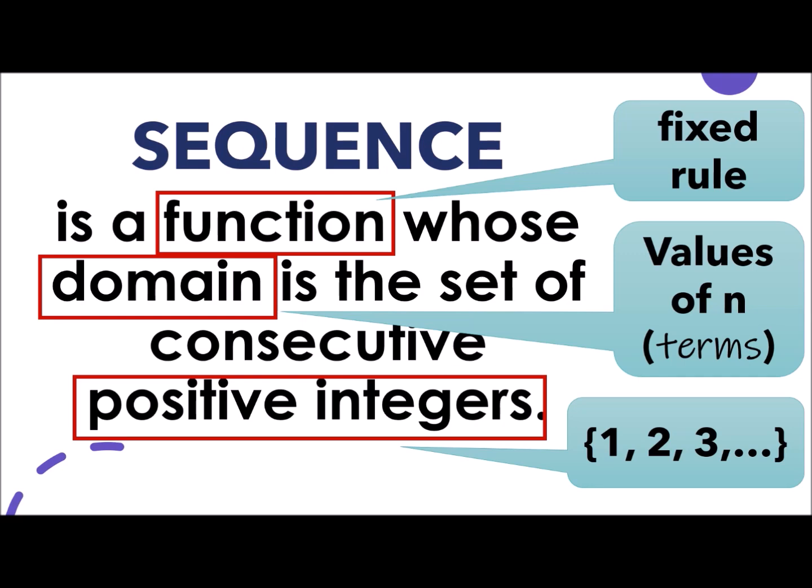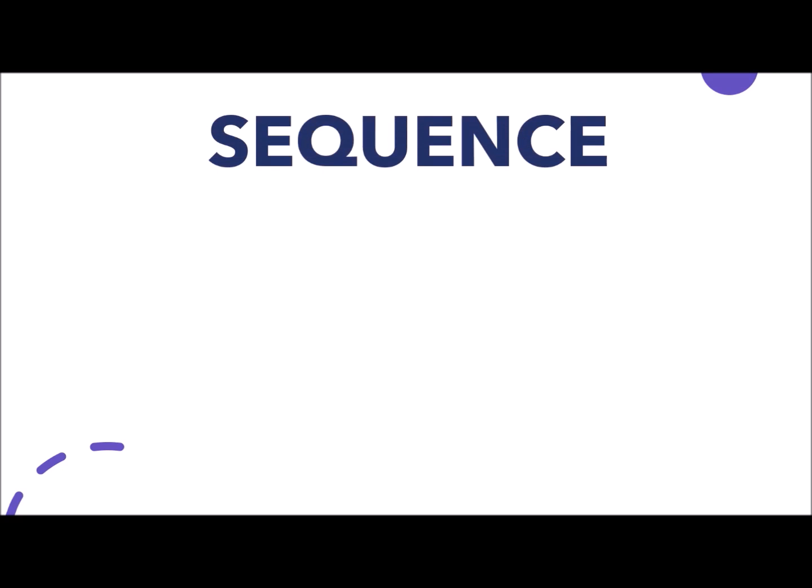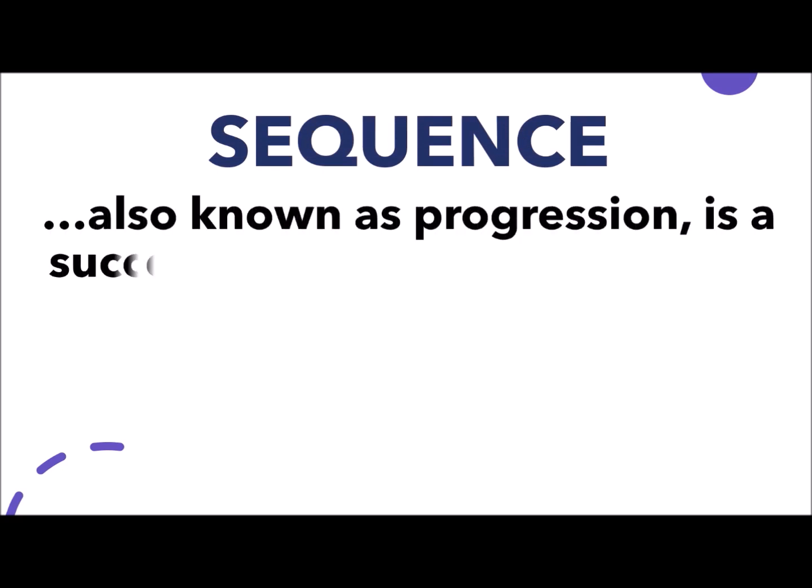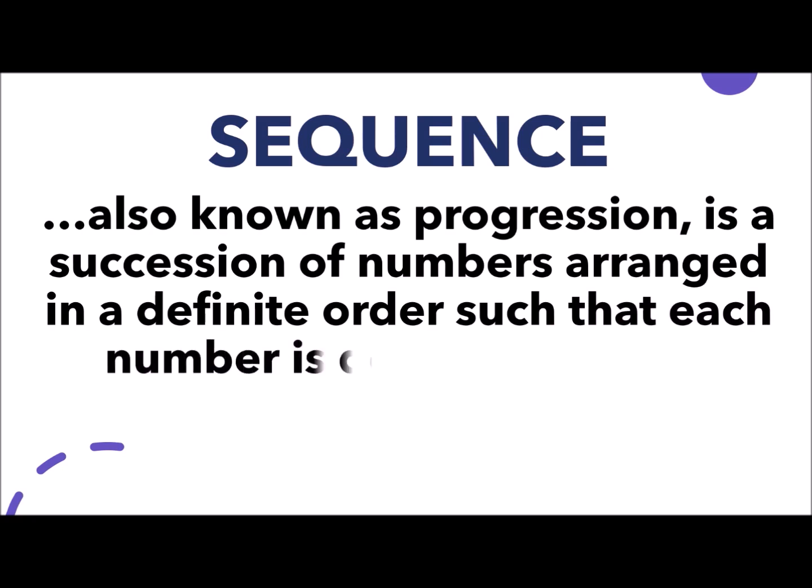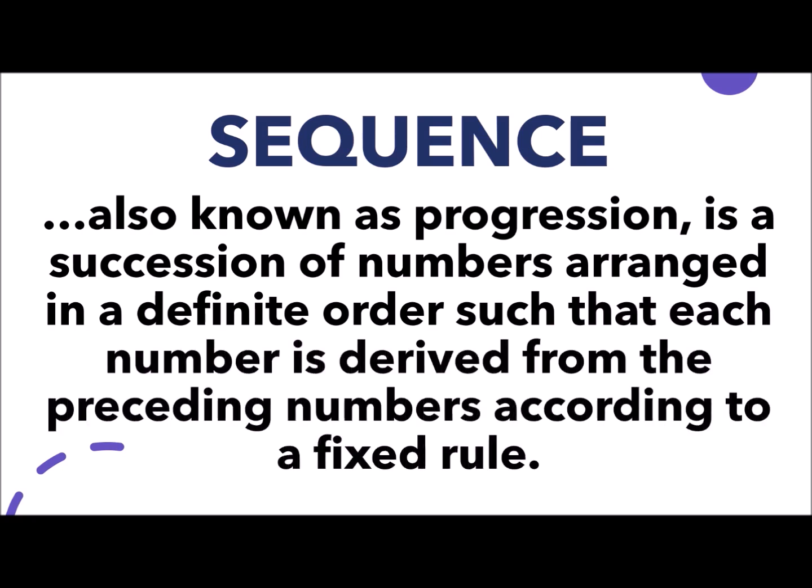Let's try another definition. Sequence, also known as progression, is a succession of numbers arranged in a definite order such that each number is derived from the preceding numbers according to a fixed rule. Why is it progression? Because it is continuous. There is a succession wherein there is an arrangement of proper order. It follows a specific order or arrangement. And lastly, like what I told to you, there is a fixed rule known to be the function.